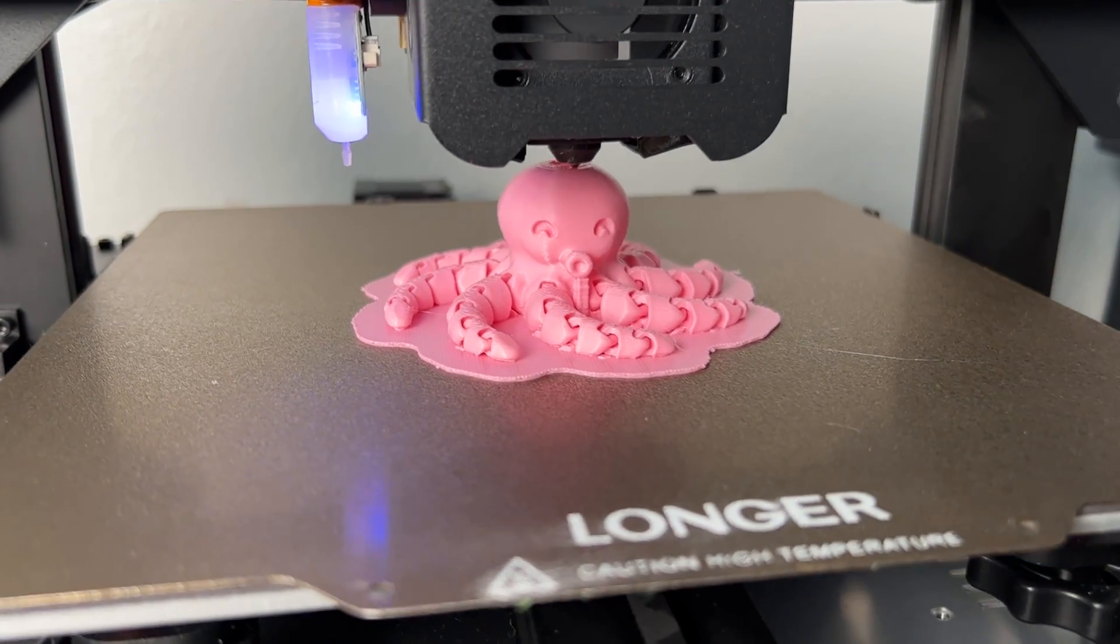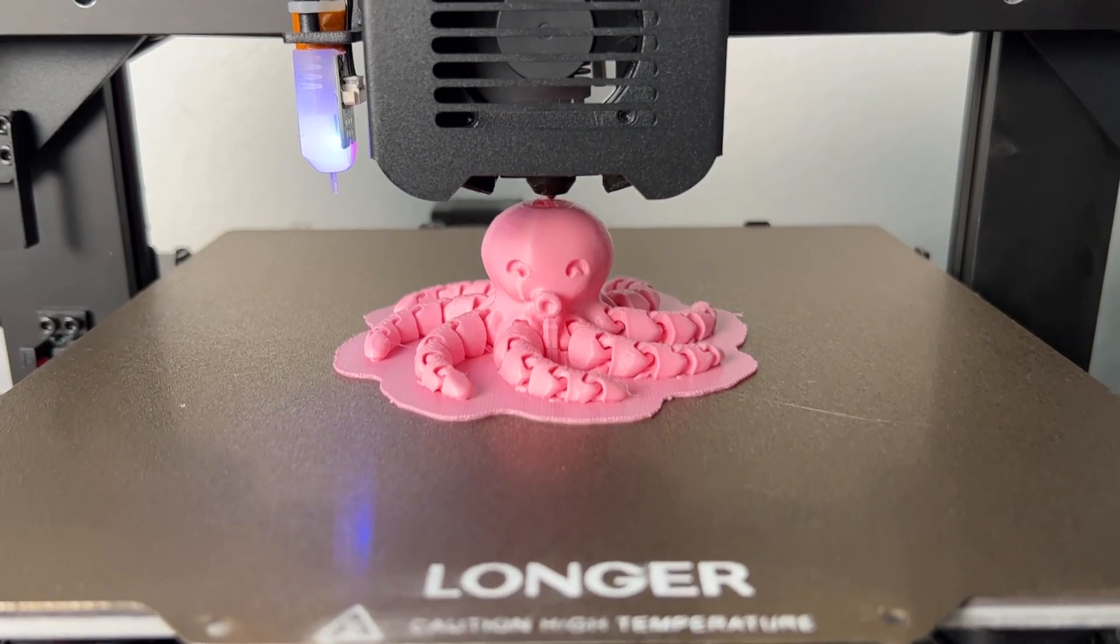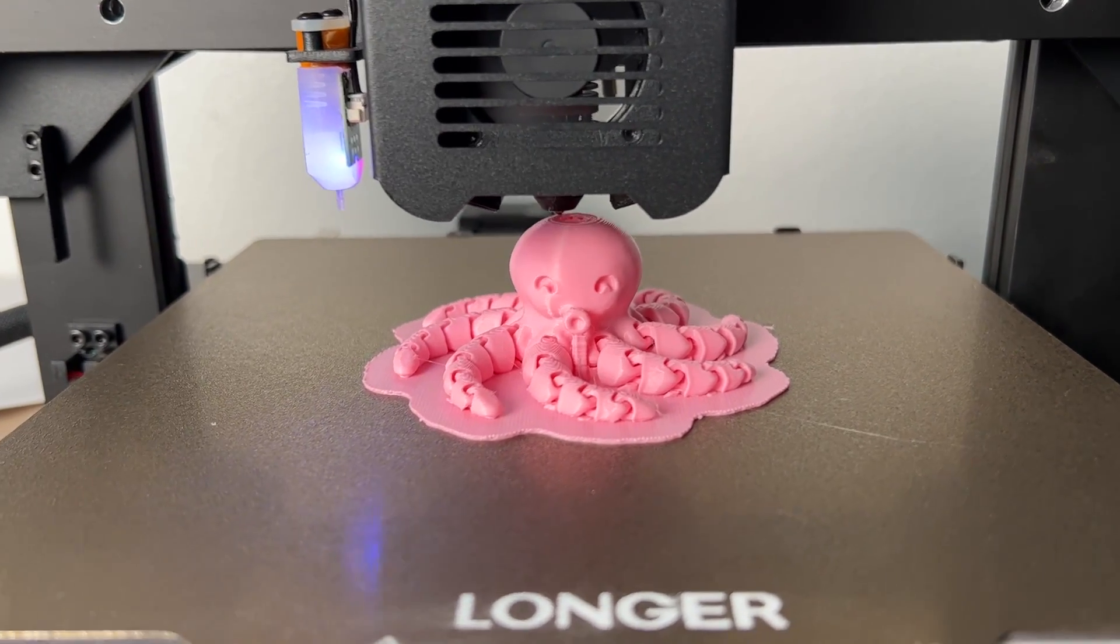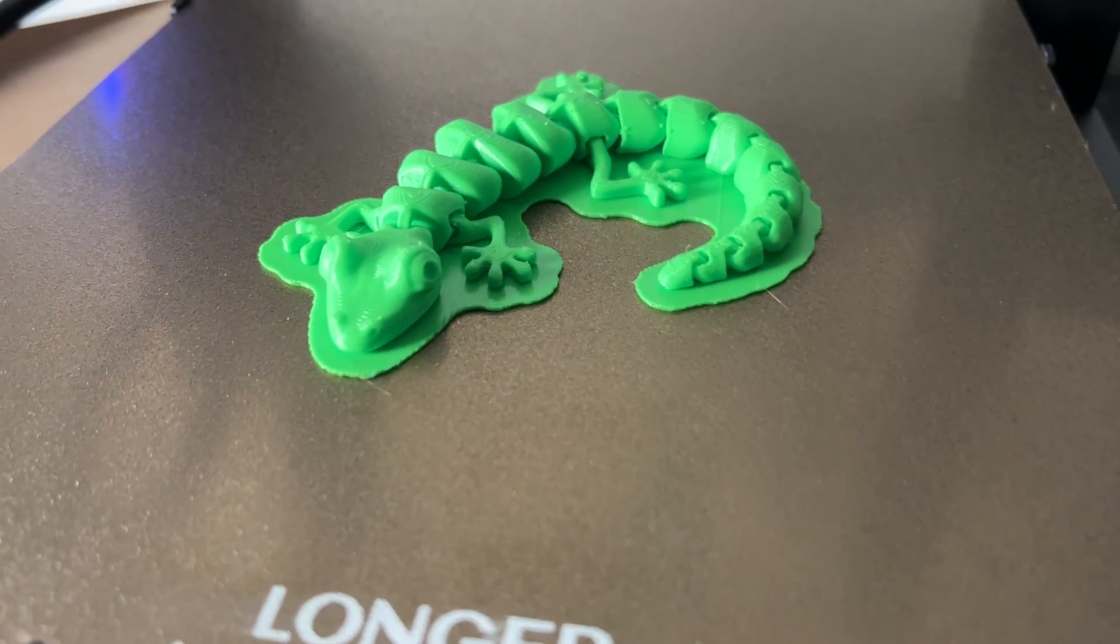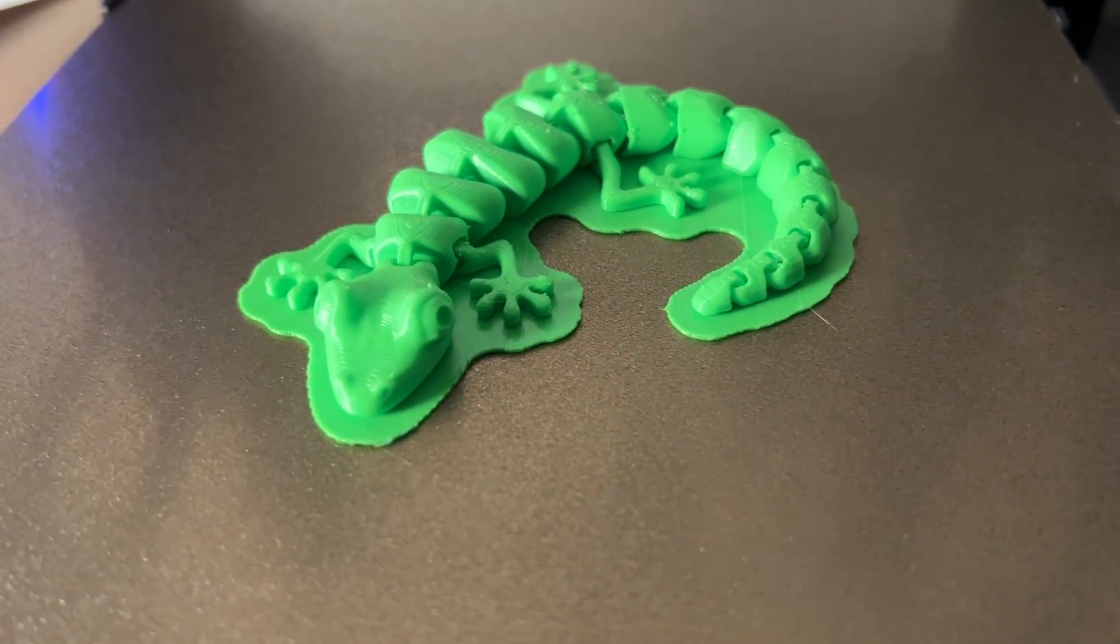All of these items were printed in place, which means no assembly or anything was required. It just prints just like it is. You can pick it up and move it. And I think that is awesome. Some of the items I've printed with a raft that you have to peel off, but some of them, I don't even use a raft or any support. That's just too cool.